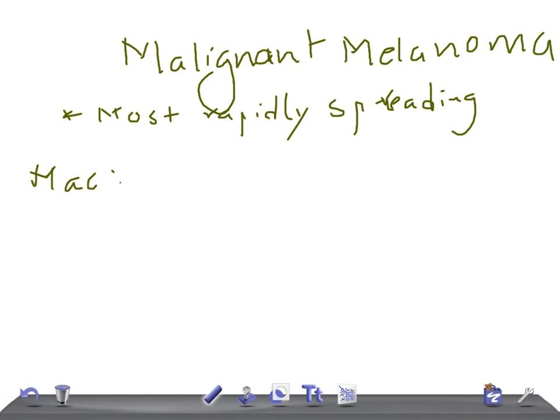Macroscopically, malignant melanoma may appear as a flat macular, slightly elevated, or sometimes nodular. These are the different shapes it can take: flat macular, slightly elevated, or nodular.